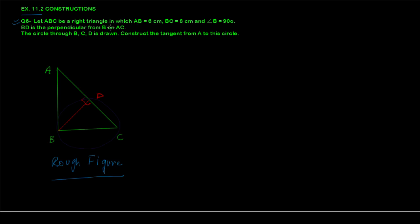Let ABC be a right-angle triangle in which AB = 6, BC = 8, and angle B = 90 degrees. BD is the perpendicular from B on AC. The circle through B, C, and D is drawn — construct the tangent from A to the circle. Constructing the tangents from A is simple once you have the circle, but getting that circle through BCD is where the confusion starts.